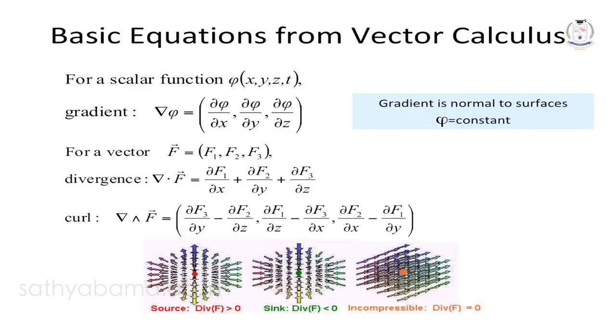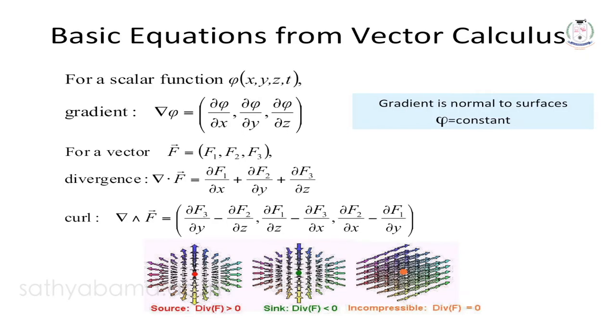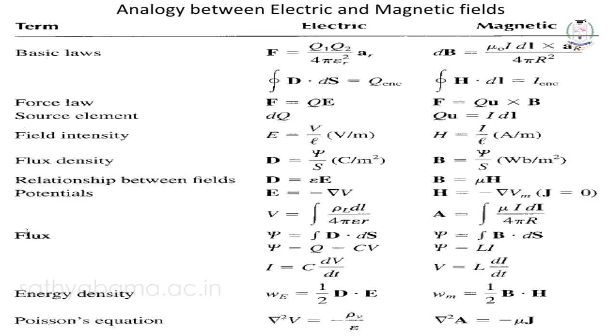There are three basic vector calculations in electromagnetic theory: gradient, divergence, and curl. Gradient is the gradient of a scalar giving a vector. Divergence — for a solenoidal field, divergence is zero; if divergence is greater than zero, the object acts as a source; if less than zero, it acts as a sink. Curl F equals zero means the vector is irrotational. Key terminologies covered include force, electric field intensity, electric flux density from Gauss's law, and electrostatic potential.